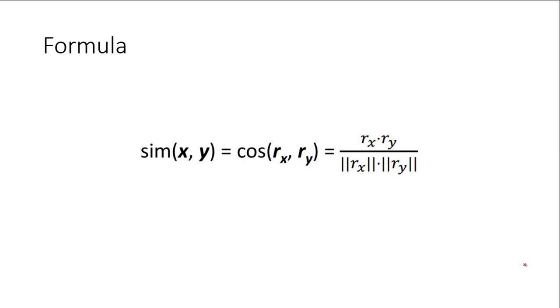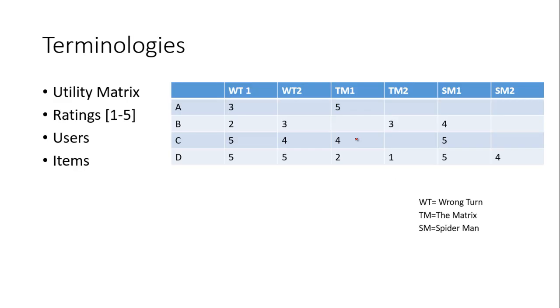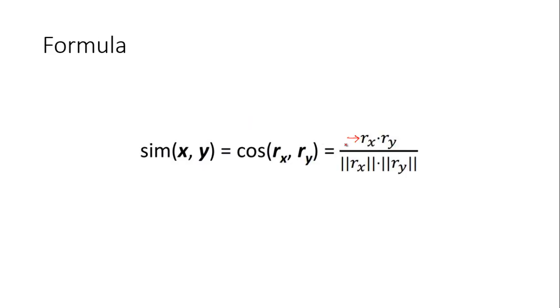The numerator of this formula contains the ratings which are common between user x and y and then we have to multiply those ratings. If we look into the previous slide, 3 and 2 are common ratings between user A and B. So we will multiply it. This will give the numerator of the formula.